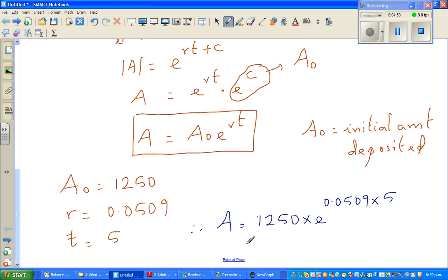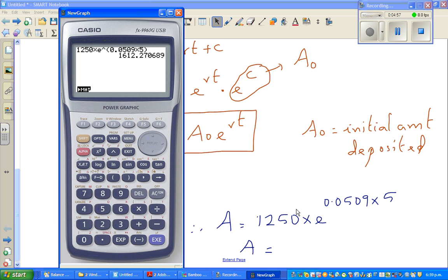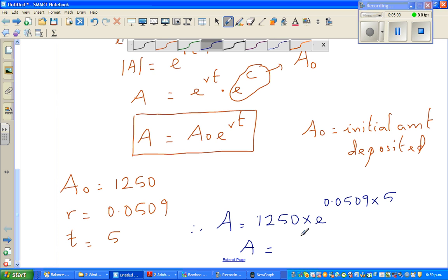This is five. So your amount after five years is 1612.3 dollars in one decimal place.